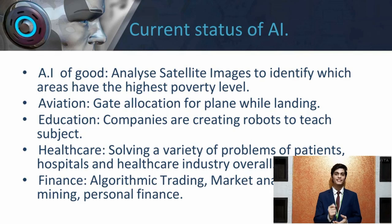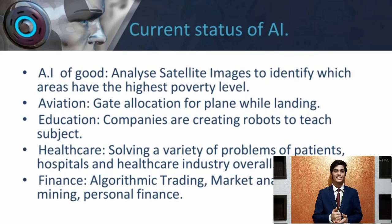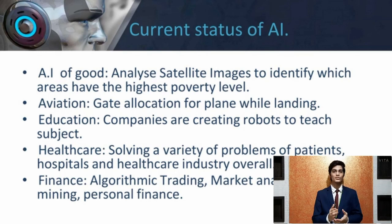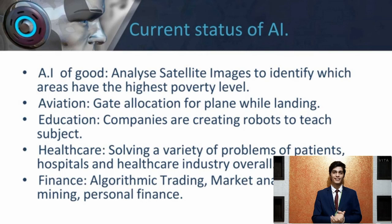Current status of AI. Our first point is AI for good. Basically, AI for good is about analyzing satellite images to identify which area has the highest poverty level. Locating people living in poverty through door-to-door surveys is sometimes difficult, and surveys are costly and infrequent. Earlier, satellites used to capture nightlight to collect data and predict wealth in a given area, but this didn't work well because nightlight alone was not sufficient. The new study turned its attention towards daylight imagery, collecting features such as roads and metal roofs, making the model more accurate to predict poverty.